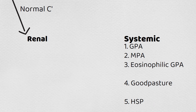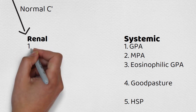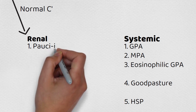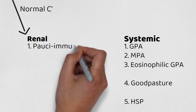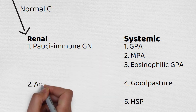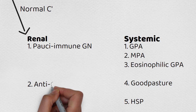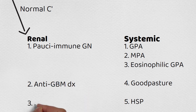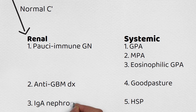The renal-limited versions are the same as the systemic, except there's no other involvement in the lungs or in the petechiae on the legs in the case of Henoch-Schönlein. So if someone has pauci-immune GN, you're basically saying it looks like ANCA vasculitis in the kidney but nothing wrong with the pulmonary tree. Anti-GBM disease is likewise Goodpasture's limited to just the kidney. And if you have Henoch-Schönlein purpura limited to just the kidney, it's referred to as IgA nephropathy.